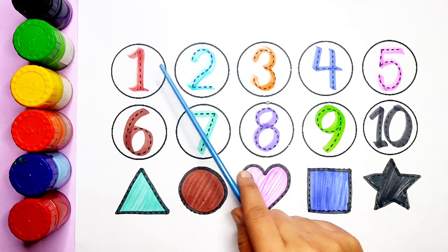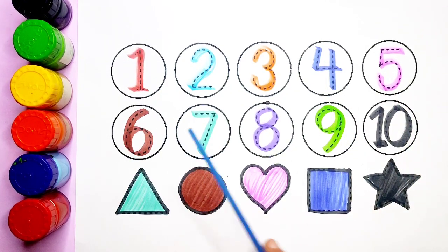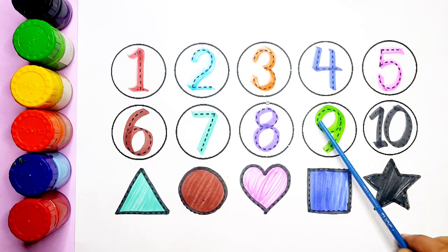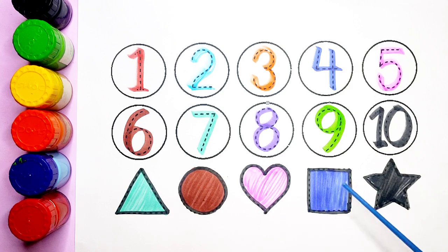One, two, three, four, five, six, seven, eight, nine, ten. Triangle, circle, heart, square, star.